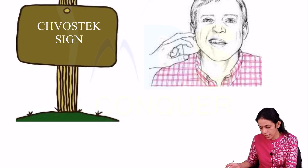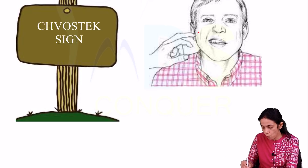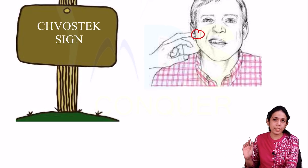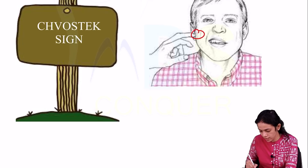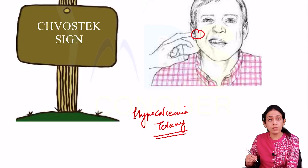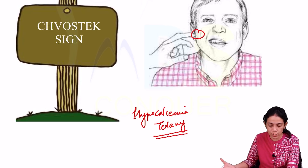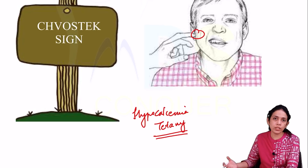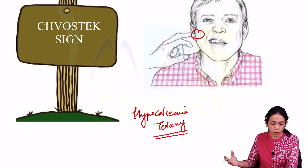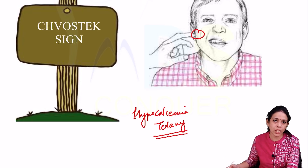Next is the Chvostek sign. When the facial nerve is tapped just anterior to the ear, there is contraction of the facial muscles. This is seen with hypocalcemia, hypoparathyroidism, or tetany, though it is not pathognomonic for tetany and can be seen in 10 to 25 percent of normal individuals.